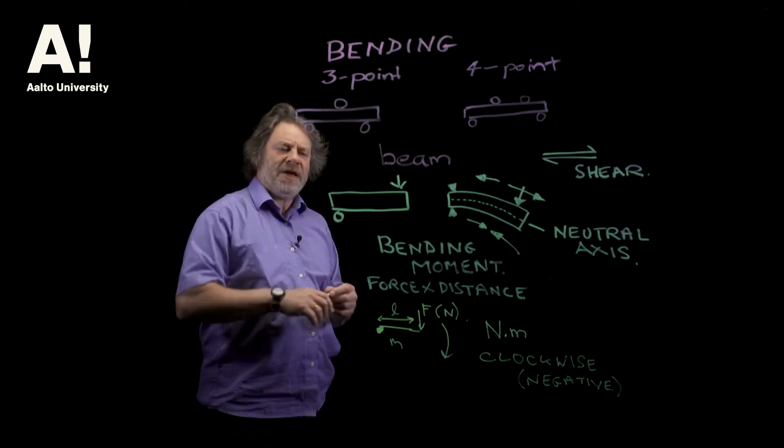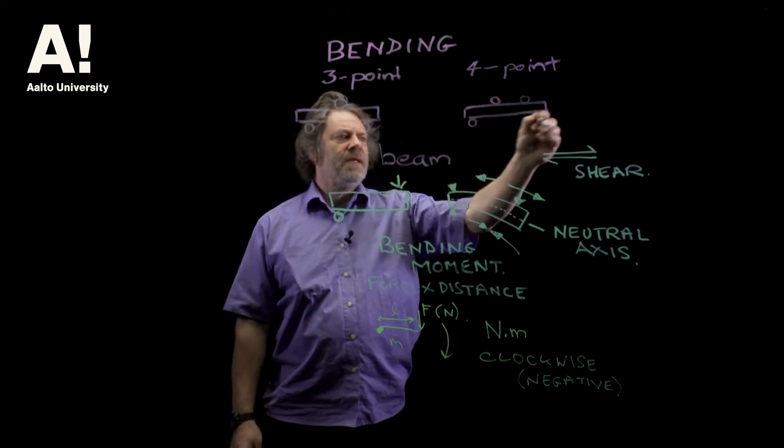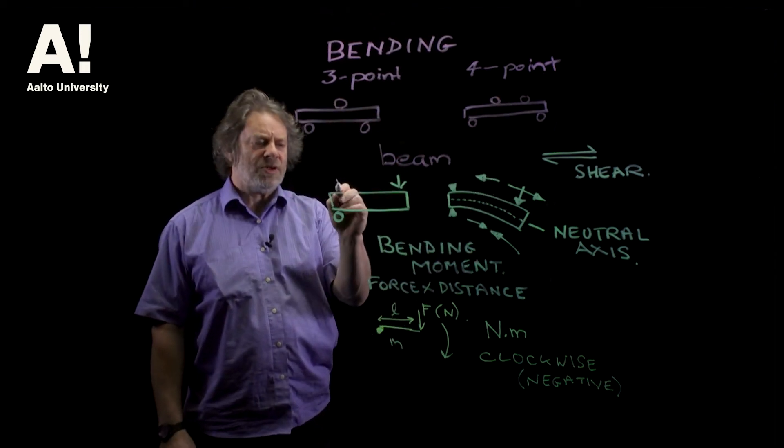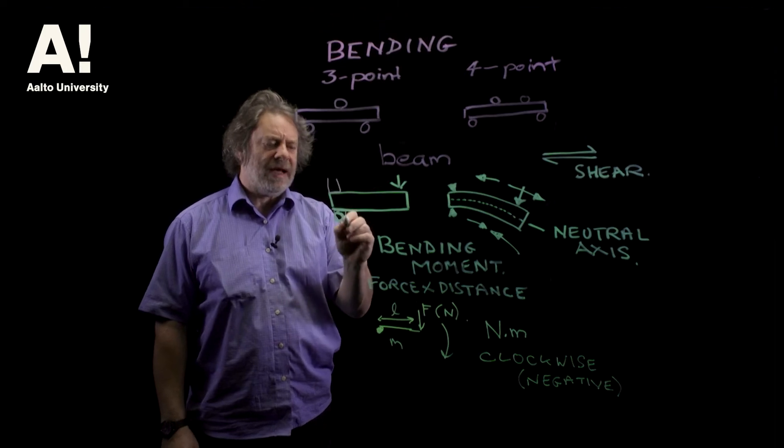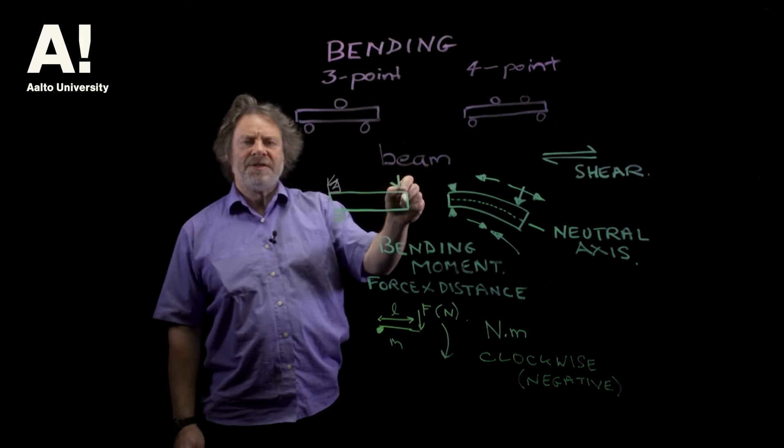Here I've shown a beam on roller supports, which is what we do the tests on, but actually what we're doing here is we've clamped one end of the beam so that can't move, but this end can move.